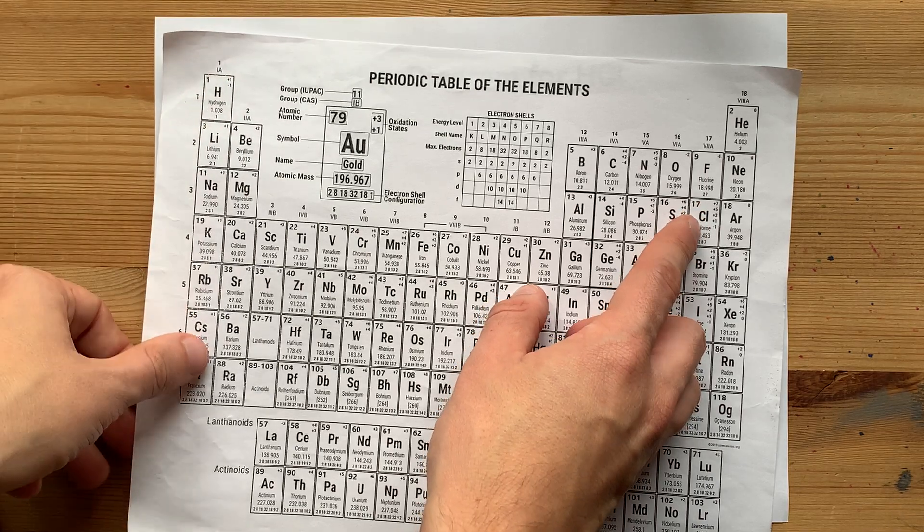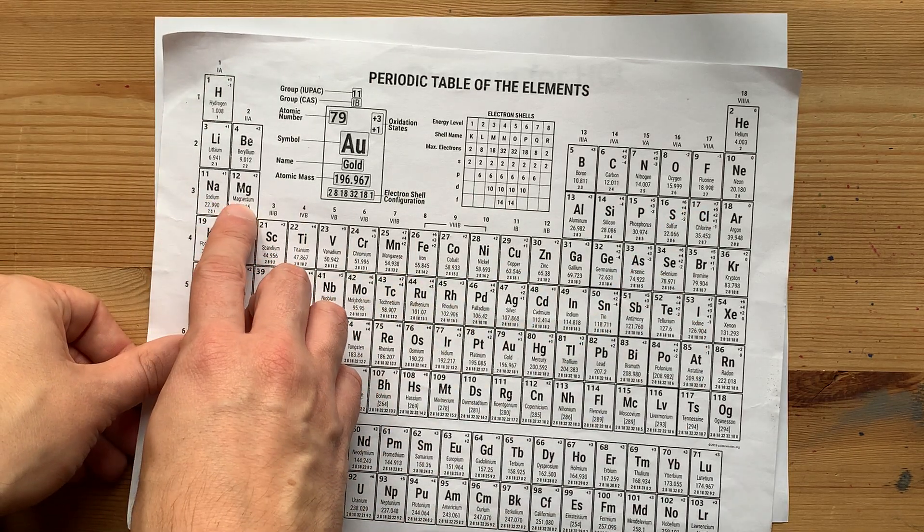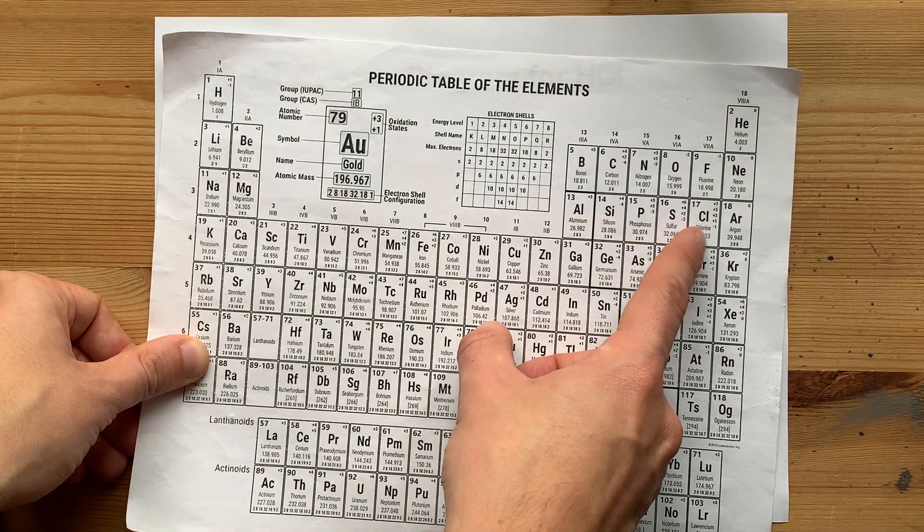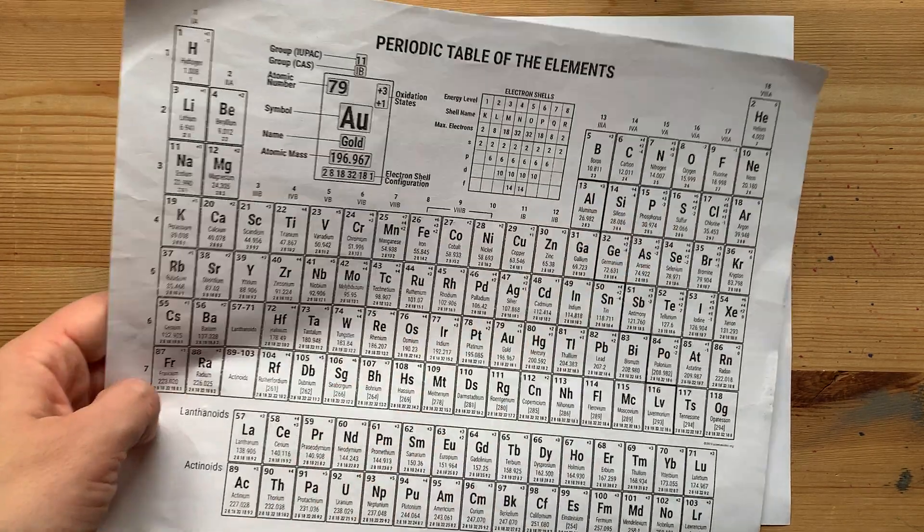Chlorine is going to be more complicated. It has two electrons in its 3s orbital and five in its 3p orbital.